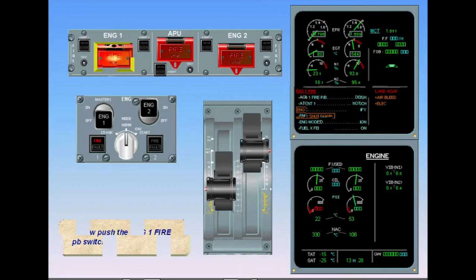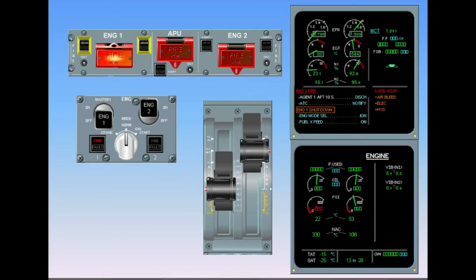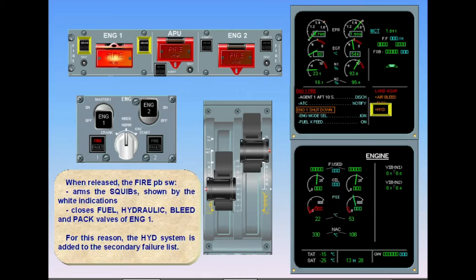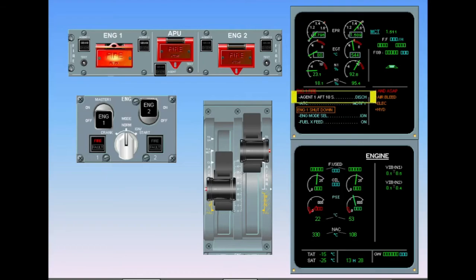When released, the fire push-button switch arms the squibs shown by the white indications and closes fuel, hydraulic, bleed and pack valves of Engine 1. For this reason, the hydraulic system is added to the secondary failure list. Simultaneously, an automatic countdown is started on the ECAM. This is to allow the engine to further slow down in order to increase the effectiveness of the agent.